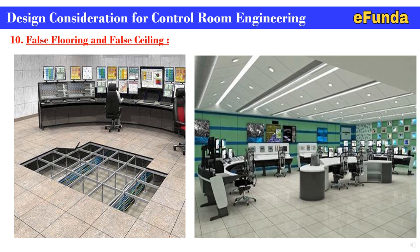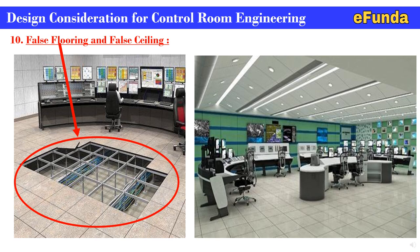False flooring allows cables from the plant area to enter through MCT and route to the operator console under the floor, hiding cables and providing space for operator movement. False ceiling helps to install lighting fixtures and lighting panel arrangements above the operator desk to increase visibility of the control room, giving the operator room a good overall appearance.